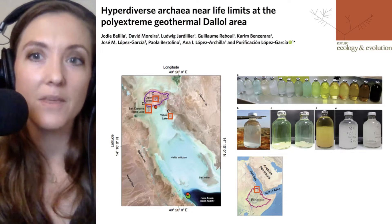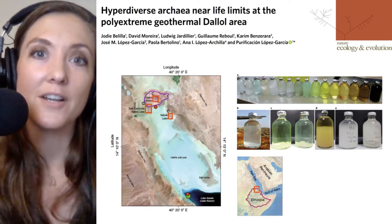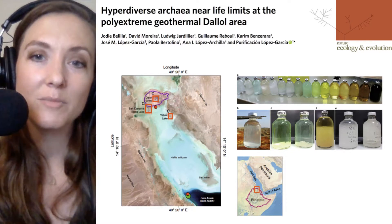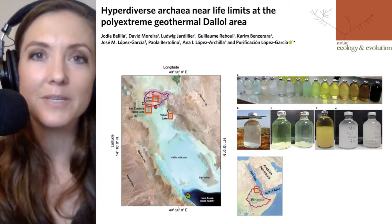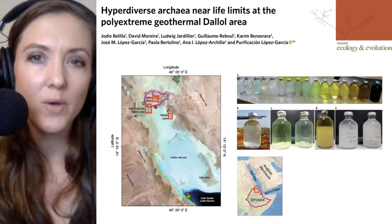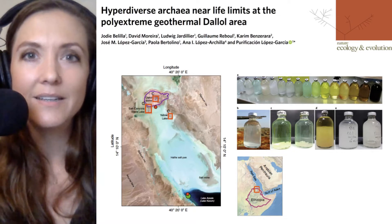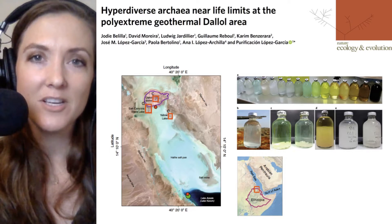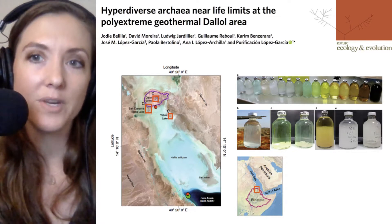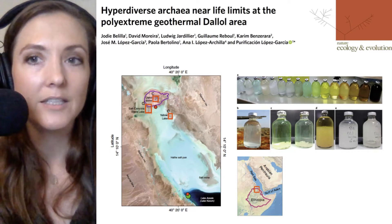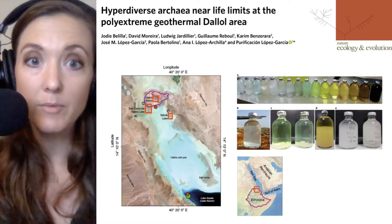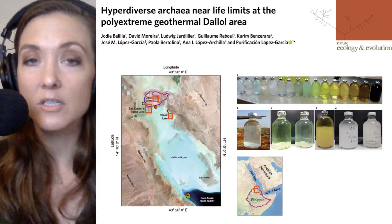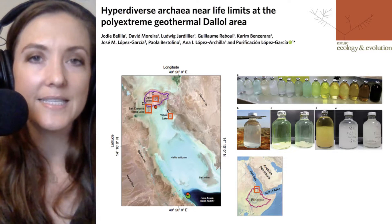Scientists have started to define the thresholds for life on Earth. Welcome to Microbial Minutes, ASM's update on what's hot in the microbial sciences — the 'how hot is too hot' edition. I'm Julie Wolf, science communications specialist at ASM, and today we're going to highlight a paper from Nature Ecology and Evolution, which starts to define the limits for conditions under which microbial life can exist.